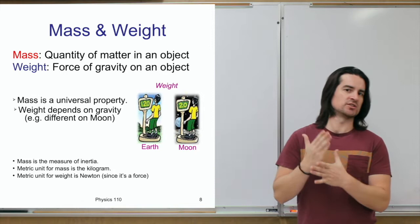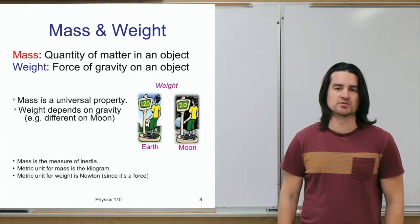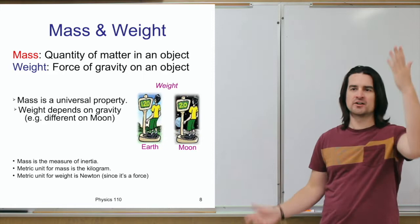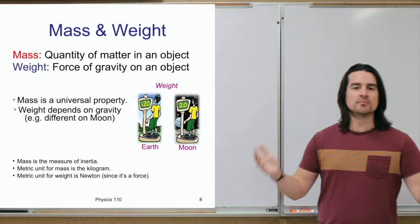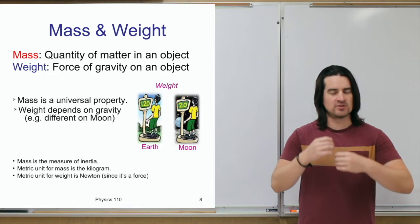My body is made up of billions and trillions of atoms, and that amount of atoms is a certain amount of mass. It doesn't matter if I'm standing on Earth, floating in outer space, on the moon, or near the sun — it's the same amount of matter making me up, so I have the same mass everywhere in the universe. However, my weight will vary depending on where I am and how large the gravitational field is.